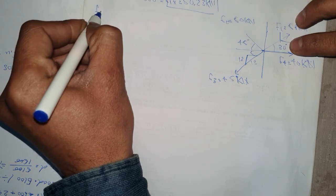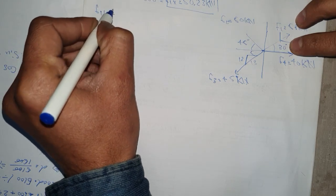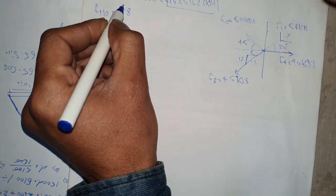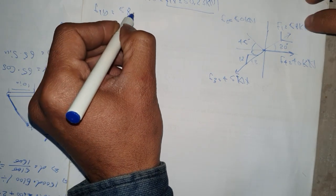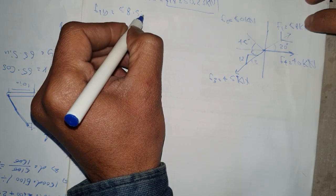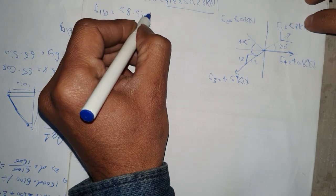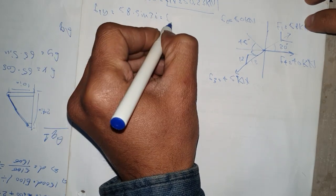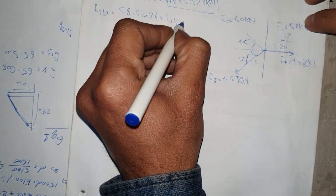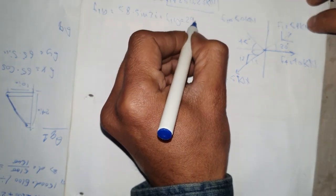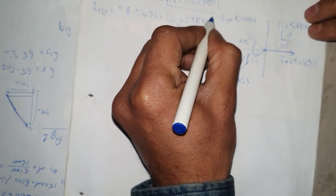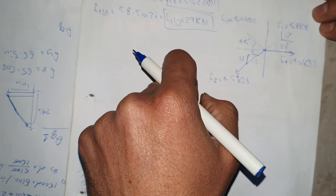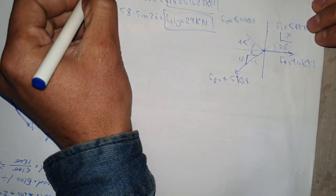For F1y, we have 58 kilonewtons times sine of 30 degrees. When we multiply these, F1y is equal to 29 kilonewtons. This completes the coordinates for the first force F1.